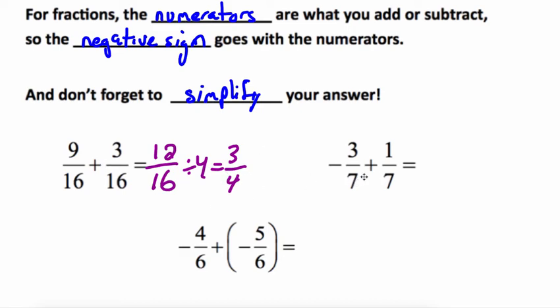Negative 3 sevenths plus 1 seventh. So I always think of my negative as going with my numerator. They have different signs so I'm going to subtract. 3 minus 1 is 2. Denominators stay the same. And then remember if they have different signs take the sign of the larger number. 3 is bigger than 1 so it's a negative 2 sevenths.